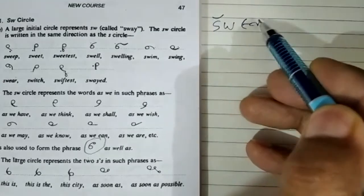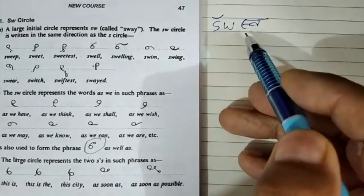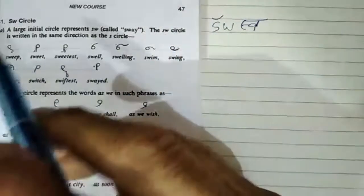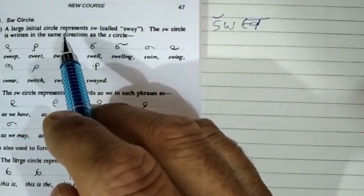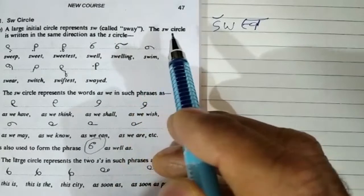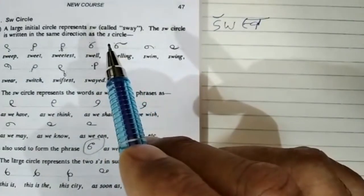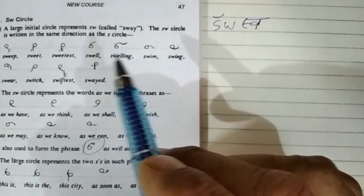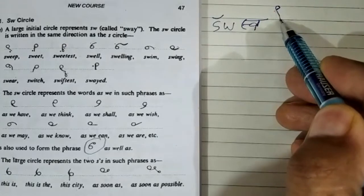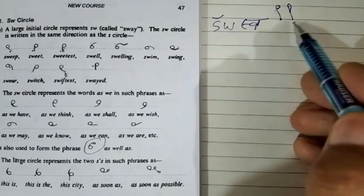This is 'Sway' — a large initial circle that represents S-W (Sway). The S-W circle is written in the same direction as the S-circle. The S-circle direction is anti-clockwise. Just as you draw a circle anti-clockwise for S or make a loop for ST, S-W follows the same anti-clockwise direction.